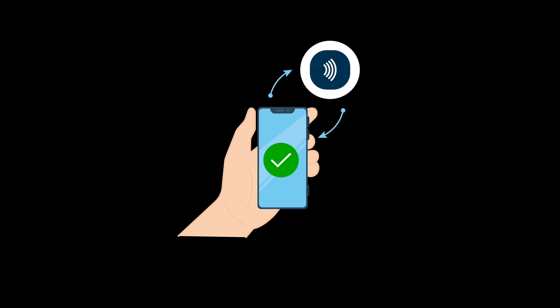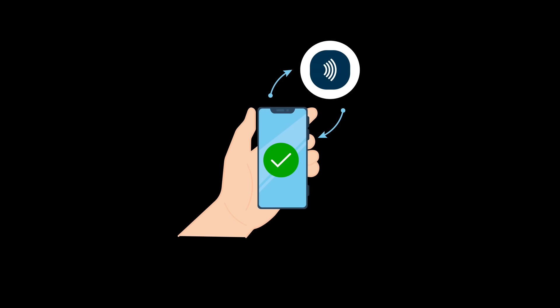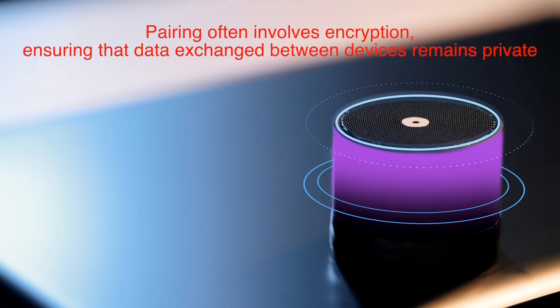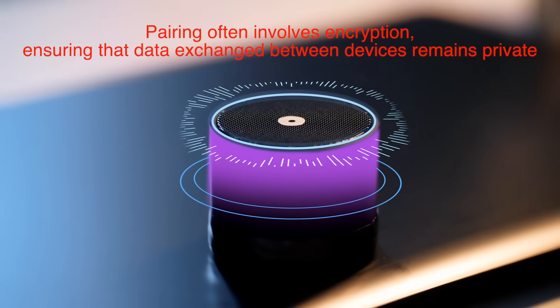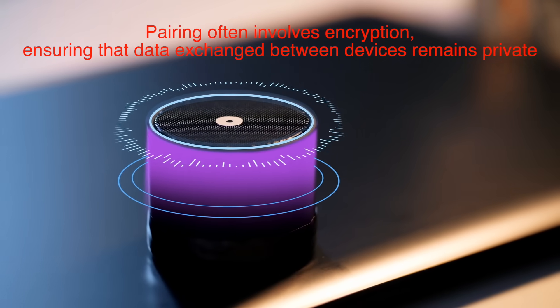With all these devices chatting wirelessly, security is a valid concern. Bluetooth addresses this with several layers of protection. Pairing often involves encryption, ensuring that data exchange between devices remains private. Additionally, newer versions of Bluetooth have adopted more sophisticated authentication protocols, making it increasingly difficult for hackers to intercept communications. That said, it's always wise to disconnect from unfamiliar devices and update your gadgets to the latest firmware.